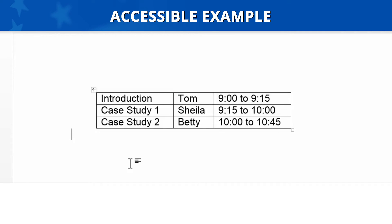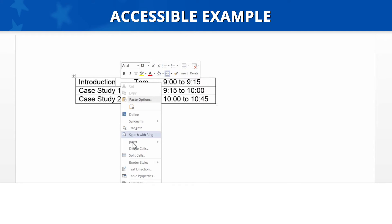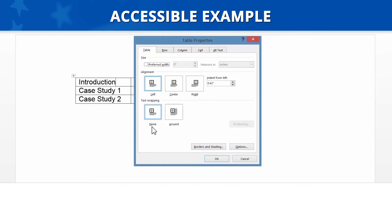Accessible Example. Now let's look at an accessible example. Let's place our cursor in the first cell of the table and then tab through. This time the tab order is: Introduction, Tom, 9 o'clock to 9:15; Case Study 1, Sheila, 9:15 to 10 o'clock; Case Study 2, Betty, 10 o'clock to 10:45. The reading order matches how the information is seen on the page. Now let's check if the table is set in line. We select the table, right-click, and go to Table Properties. On the Table tab, text wrapping is set to None. Because this layout table has a correct reading order and is set in line, it is considered accessible.